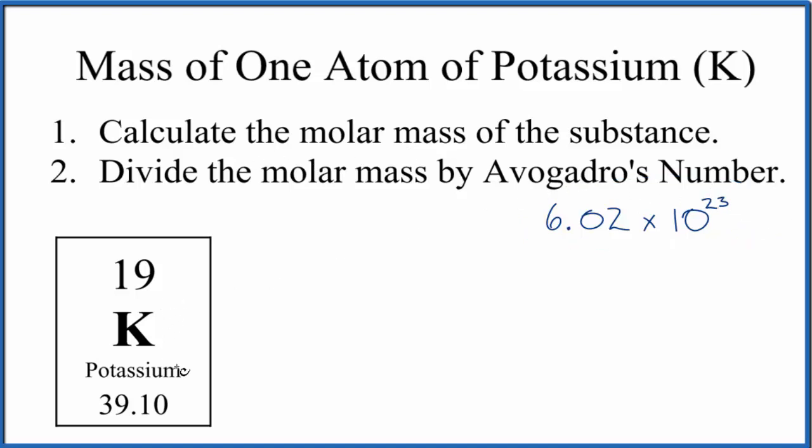So the atomic mass for potassium, the average atomic mass right here from the periodic table, 39.10, and you can think of the units as grams per mole. So we have 39.10 grams in one mole of potassium.